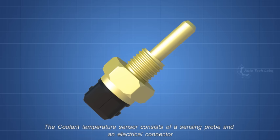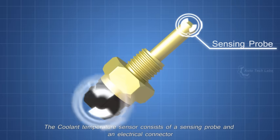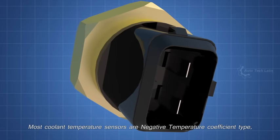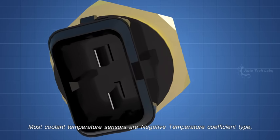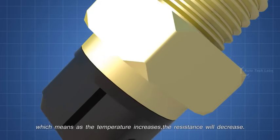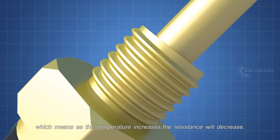The data is also used to control the radiator fan and to update the temperature gauge on the driver console. The coolant temperature sensor consists of a sensing probe and an electrical connector. Most coolant temperature sensors are negative temperature coefficient type, which means as the temperature increases, the resistance will decrease.